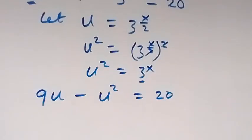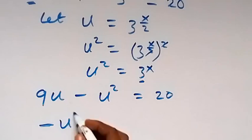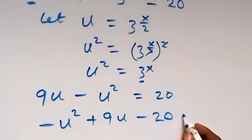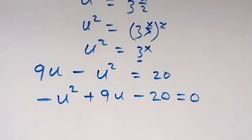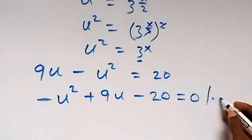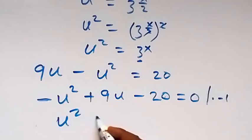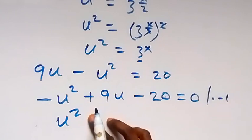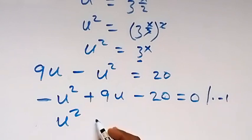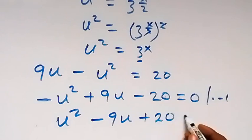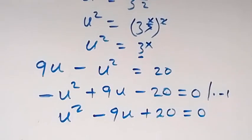We arrange this as: minus u squared plus 9u minus 20 equals 0. Then, multiplying through by minus 1, this becomes u squared minus 9u plus 20 equals 0.